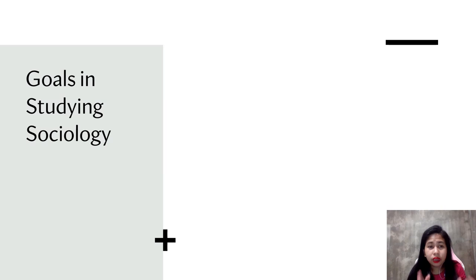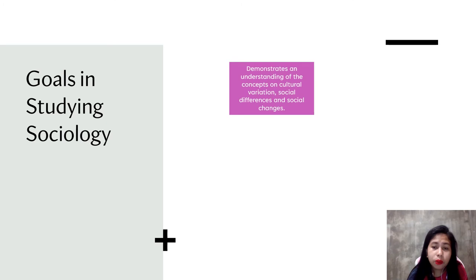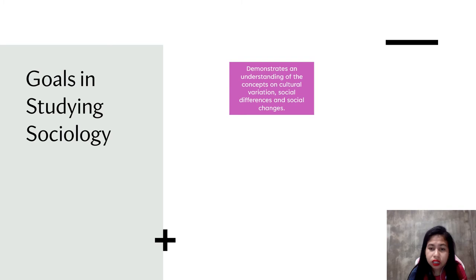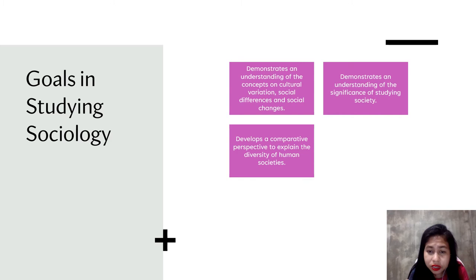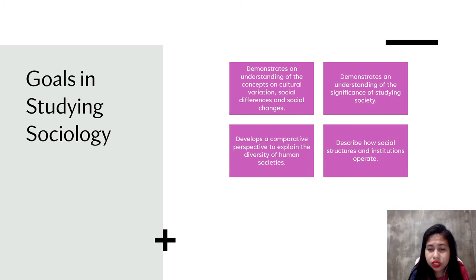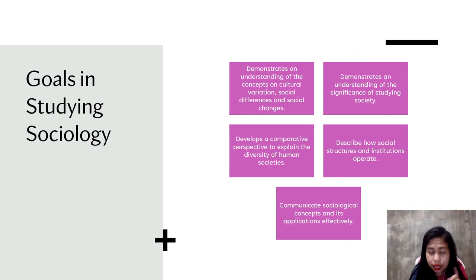Here are some of the goals when we engage in the study of sociology. Number one, demonstrate an understanding of the concepts of cultural variation, social differences, and social changes. Number two, demonstrate an understanding of the significance of studying society. Number three, develop a comparative perspective to explain the diversity of human society. Number four, describe how social structures and institutions operate. And lastly, communicate sociological concepts and their applications effectively.